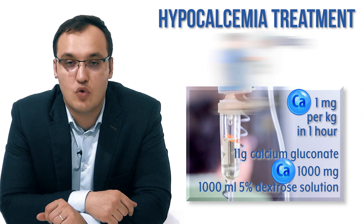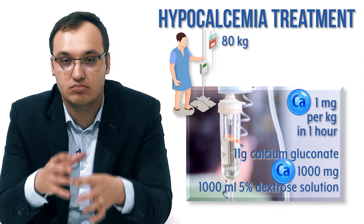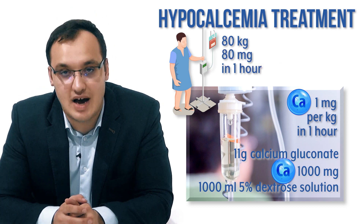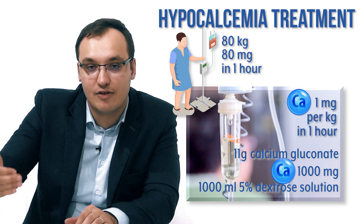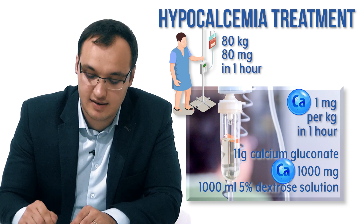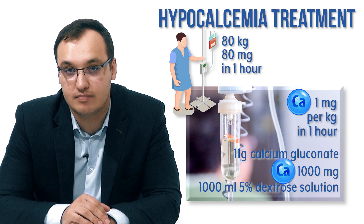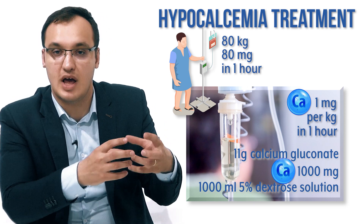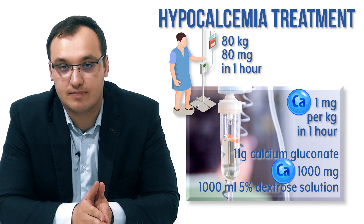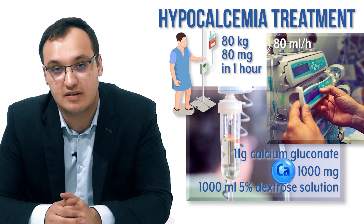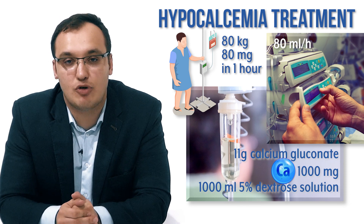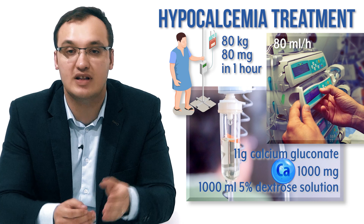Now let's calculate the rate. Take a patient who is 80 kilograms. We give 1 milligram per kilogram per hour, so we give 80 milligram per hour. Since our prepared infusion is 1 milligram per milliliter, we need to run 80 milliliter per hour — which we can set on an infusion pump. For a 50 kilogram patient, we would give 50 milliliter per hour.